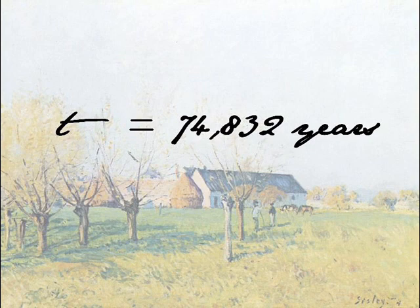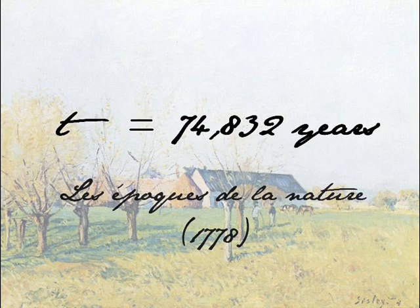He publishes his results in a book on natural history in 1778, but the University of Paris condemns him over the number and he issues a retraction to keep them happy. The date is significant because just three years before, James Hutton had presented his theory of the earth to the Royal Society in Edinburgh, in which he too concluded that the earth must be a lot older than previously thought.